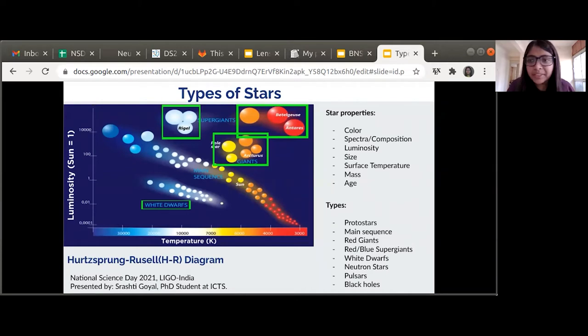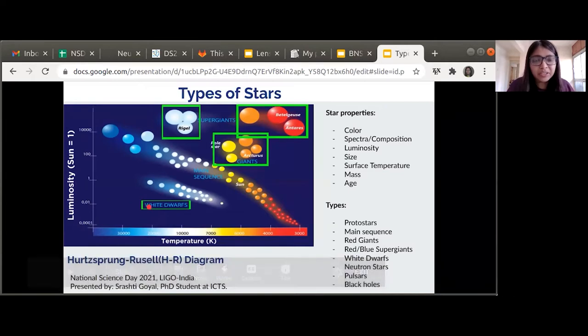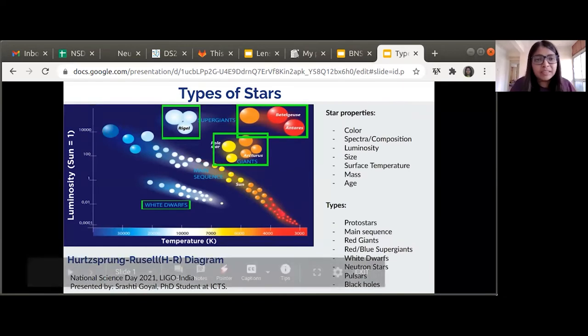Currently, the classification of the stars is based on this diagram, which is called the HR diagram, which is the plot between the luminosity and the temperature of the stars. Here in this plot, the colors actually show the color of the stars, and as you can see, most of the stars fall under the main sequence category, which is this diagonal line.